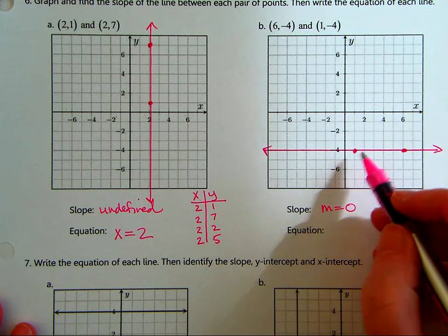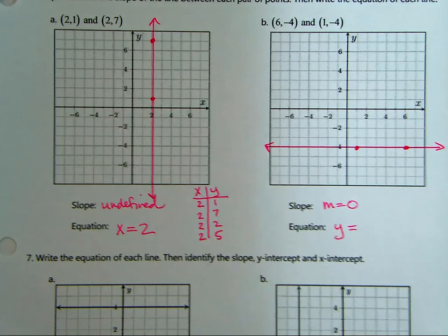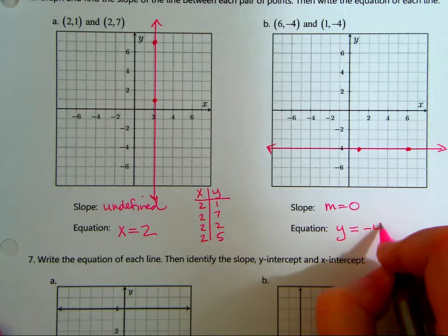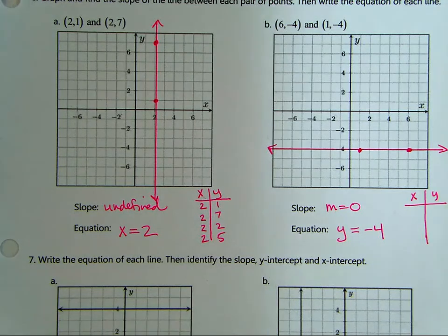The equation for this would be y equals negative 4. Exactly. So if we made a table, which I think there are some of these tables in webwork. There are. Yeah. There it is.